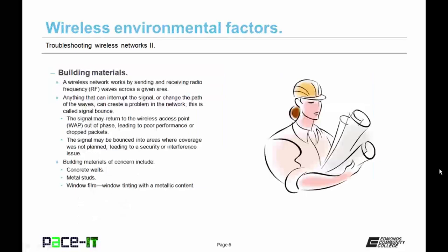We don't think about it very often, but building materials can influence wireless networks. A wireless network works by sending and receiving radio frequency waves across a given area. Anything that can interrupt the signal or change the path of the waves can create a problem in the network. This is called signal bounce.